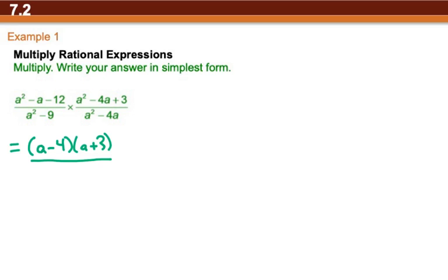On the bottom, a² - 9, it's a difference of squares. So (a + 3)(a - 3).